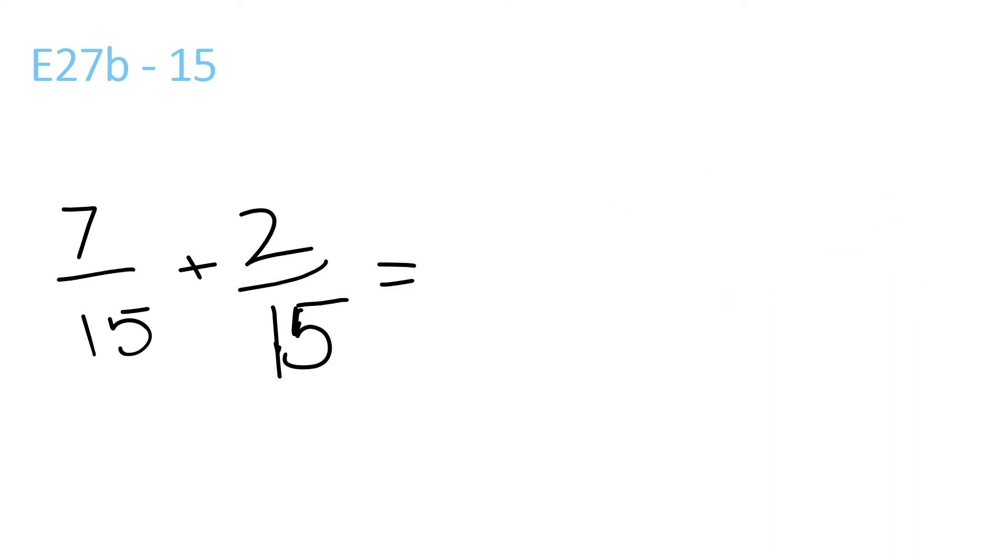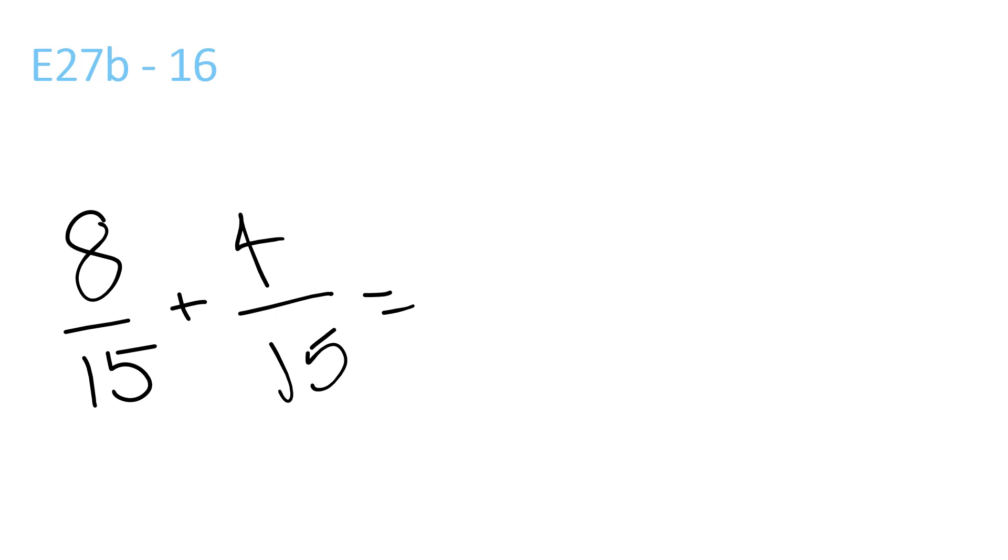7 plus 2 is 9 over 15, which equals 5. Last question: 8 plus 4 is 12 over 15. 3 goes into 12 and 15—3 goes into 12 four times, 3 goes into 15 five times—so that's 4 over 5. Thanks for watching.